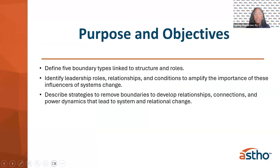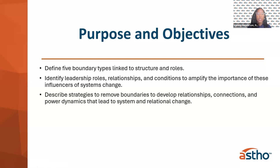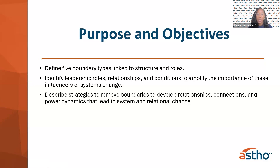The purpose and objectives — why are we here? One, it is to define the five types of boundaries. You should have received some prework on the different types of boundaries, and we're going to dive a little deeper into that and figure out how it links to your structure and your roles within your organization. We're going to identify leadership roles, relationships, and conditions that amplify the importance of these influencers of systems change, including the FSG model we always reference in our Stretch framework. And lastly, to describe strategies to remove boundaries, develop relationships, connections, and power dynamics that lead to long-lasting system and relational change.